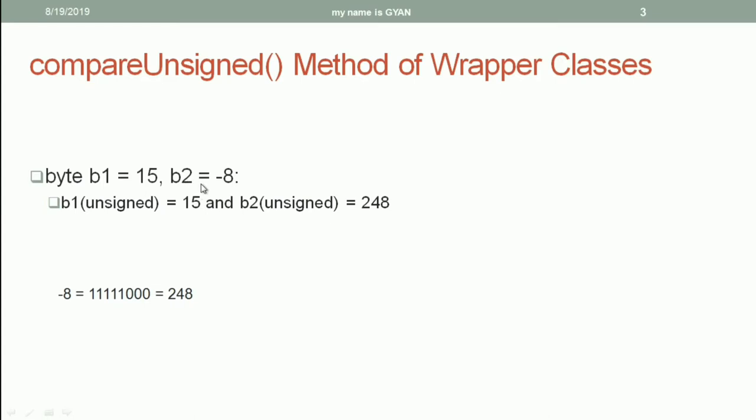But the binary of b2 which contains the 8 bit binary of minus 8 when treated in unsigned way will become 248. You can see here minus 8, the 8 bit binary of minus 8 is this one.